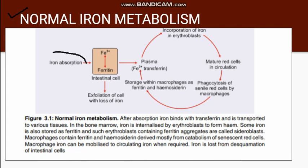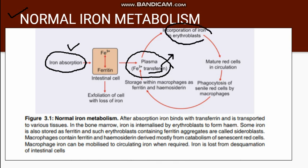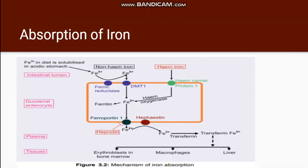Normal iron metabolism consists of iron absorption — firstly from food, then the iron absorbed goes into the plasma where it binds to a protein known as transferrin. Then there is incorporation of the iron from transferrin into the erythroblasts, and some of the iron which is in excess gets stored. The ferric form of iron from the diet is converted into ferrous form with the help of an enzyme known as ferric reductase, which is present on the enterocytes.